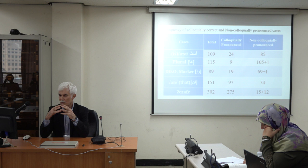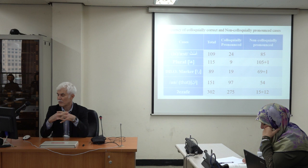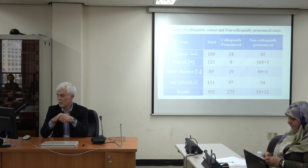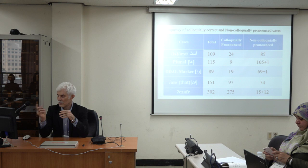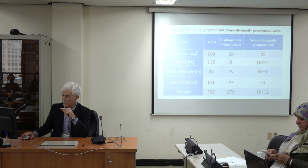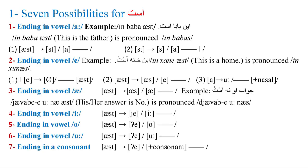For the totality across all students: for 'ast', there were 109 cases total — 24 colloquially pronounced, but 85 non-colloquially pronounced. For 'ha', 115 cases — only 9 correctly colloquially pronounced, 106 cases non-colloquially pronounced. For 'ra', 89 cases — 19 colloquial, the rest non-colloquial. For 'an', 151 cases — 97 colloquially pronounced, 50 non-colloquial. And for 'ezafe', 302 cases — 271 were correct.